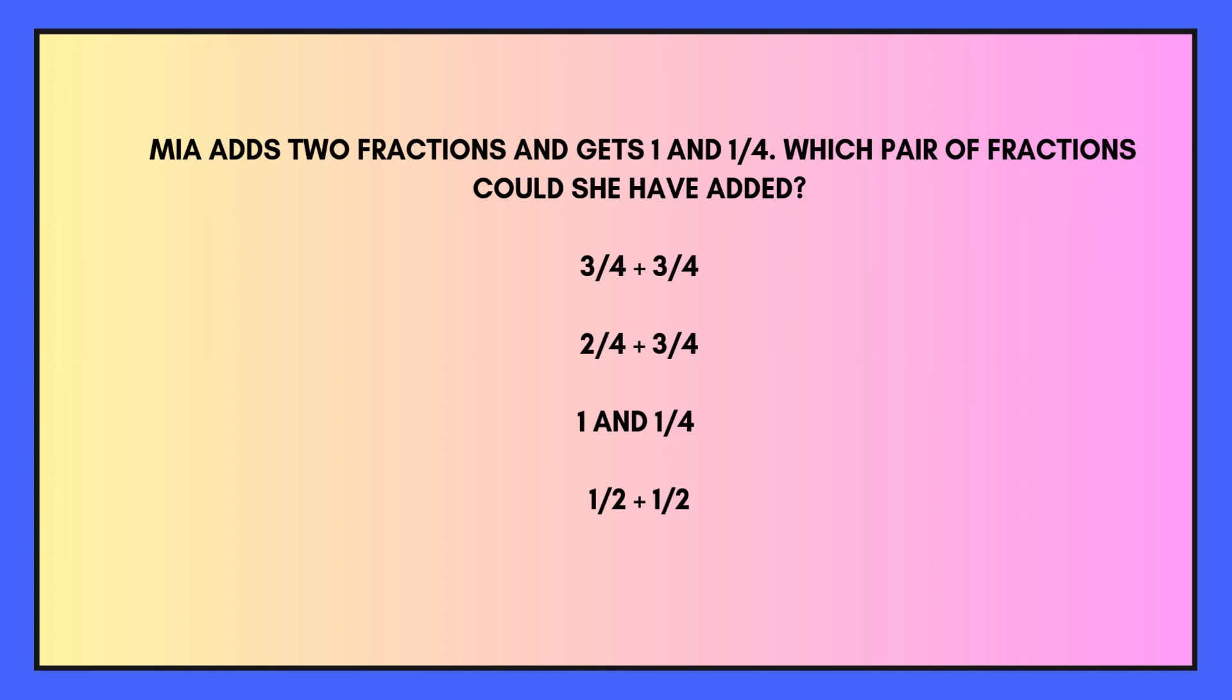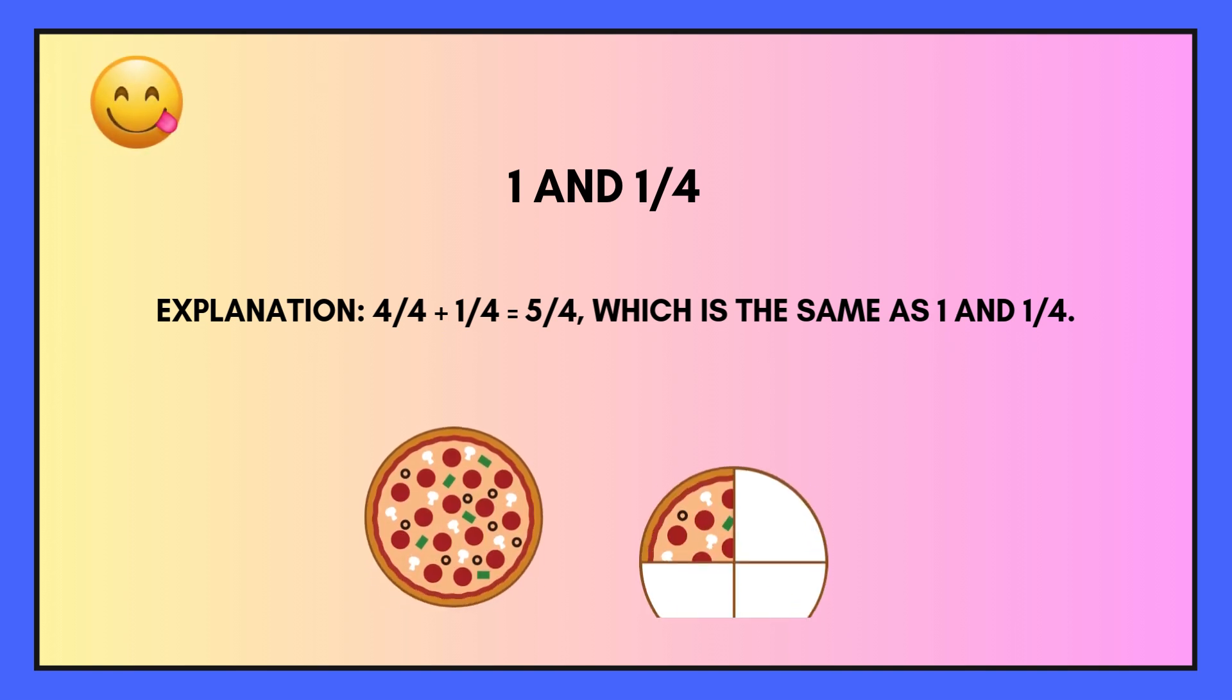The answer is 1 and 1 quarter. And our explanation is 4 quarters is a whole, so that's 1, plus 1 quarter is 5 quarters, but that's an improper fraction. So the correct way to write it is 1 and 1 quarter.